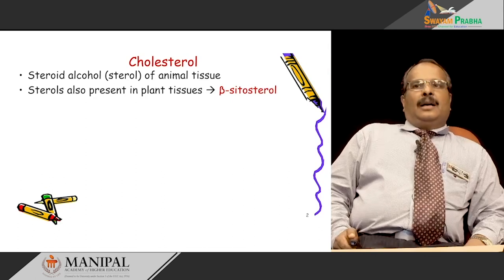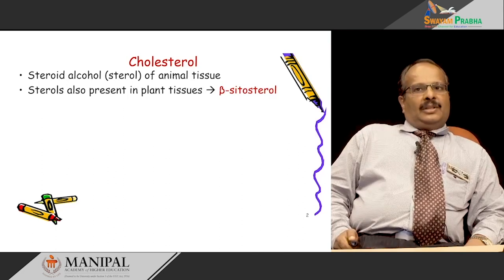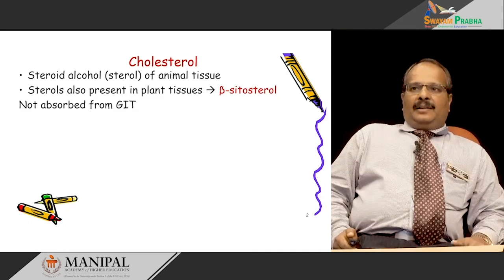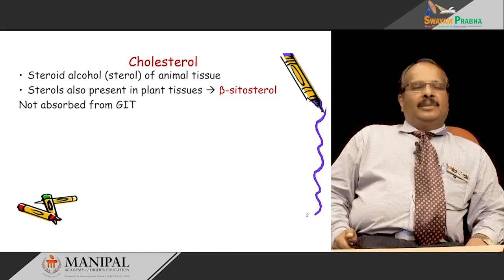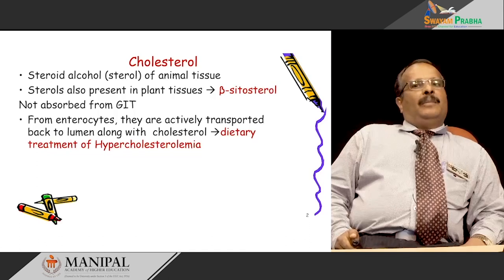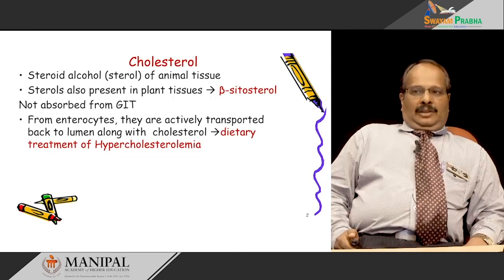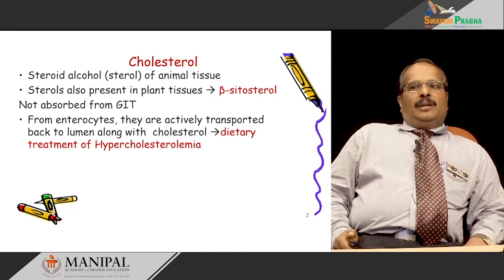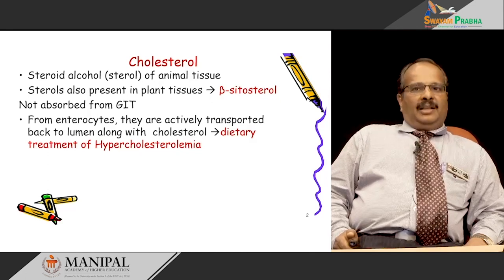Sterols are present in plants, for example beta-sitosterol. This beta-sitosterol, which is present in vegetables, is not absorbed from the gastrointestinal tract. They are actively transported back from the enterocytes to the lumen along with cholesterol. So that means they interfere with animal cholesterol absorption, and they can be used as dietary treatment for hypercholesterolemia.